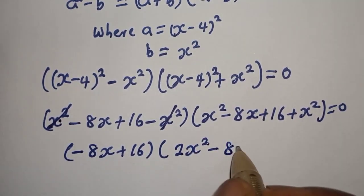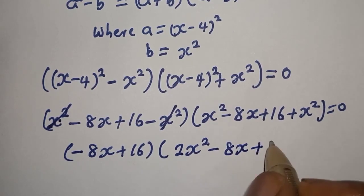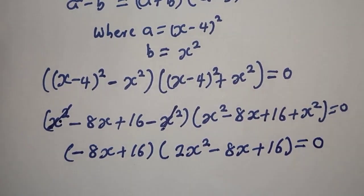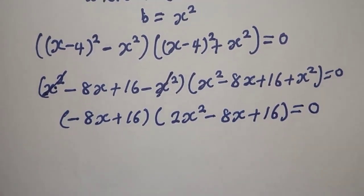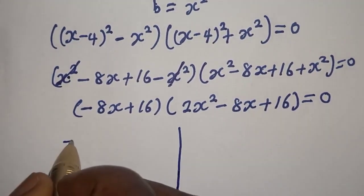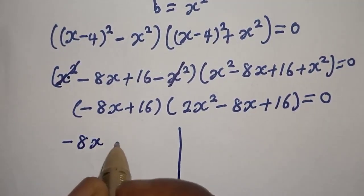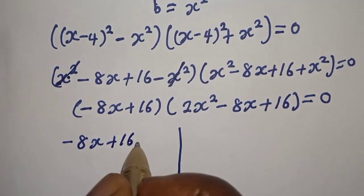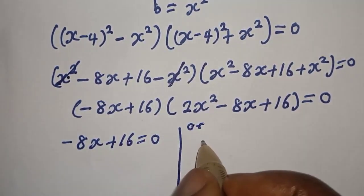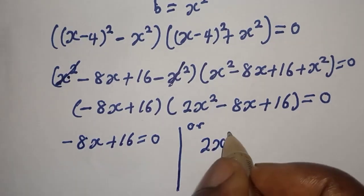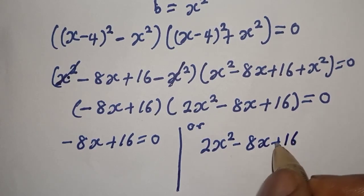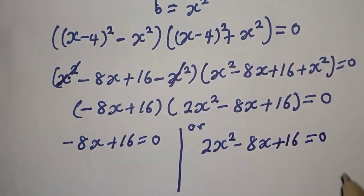We have 2s squared minus 8s plus 16, plus 16, multiplied by 2s squared plus 16, is equal to zero. There are two cases. The first case is minus 8s plus 16 is equal to zero. The second case is 2s squared minus 8s plus 16 is equal to zero.